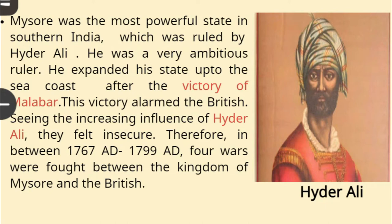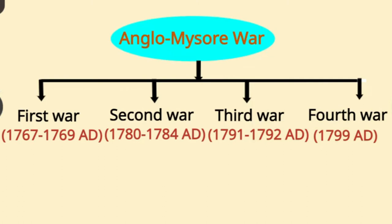Seeing the increasing influence of Hyder Ali, the British felt insecure. Therefore, between 1767 AD to 1799 AD, four wars were fought between the Kingdom of Mysore and the British. These were: the First Anglo-Mysore War in 1767 to 1769 AD; the Second Anglo-Mysore War in 1780 to 1784 AD; the Third Anglo-Mysore War in 1791 to 1792 AD; and the Fourth Anglo-Mysore War in 1799 AD.